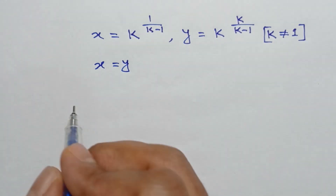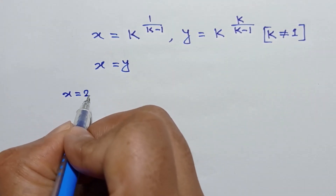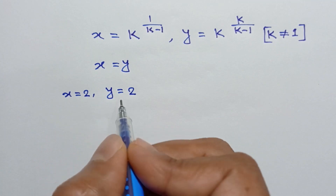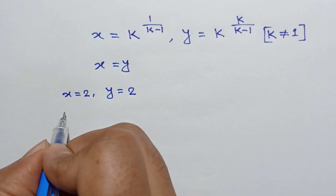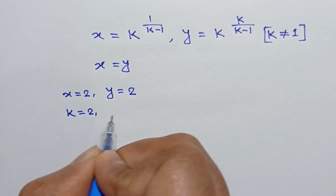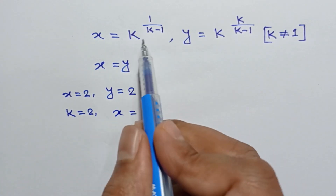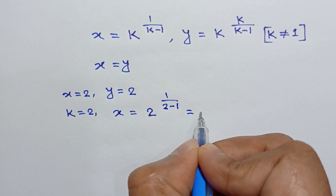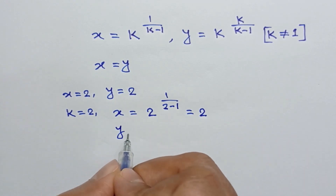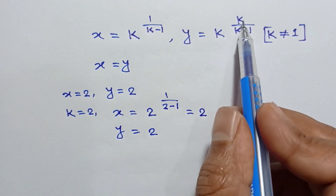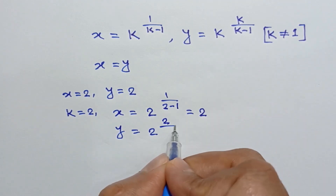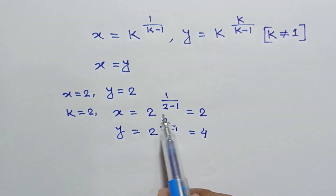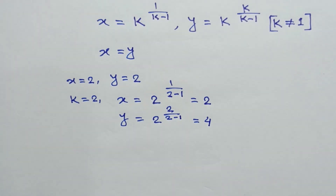For example, when x is equal to 2, then y is equal to 2 — this is a solution. And when k is equal to 2, substituting into our formula: x is equal to 2 to the power 1 over 2 minus 1 is equal to 2, and y is equal to 2 to the power 2 over 2 minus 1, which equals 4. So these are the solutions of this equation.